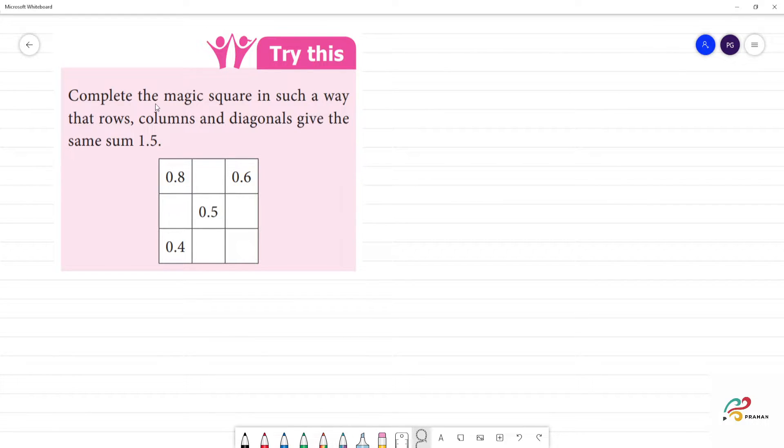Complete the magic square in such a way that rows, columns and diagonals give the same number 1.5.